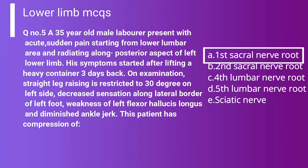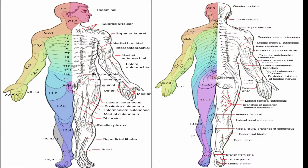The correct answer is Option D — fifth lumbar nerve root — because the sensory supply is on the lateral side of the dorsum of the foot, and it causes weakness in dorsiflexion. This nerve root is most commonly involved in compression from L4-L5 disc prolapse.